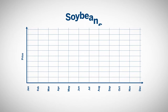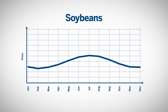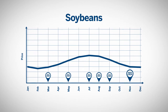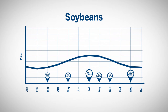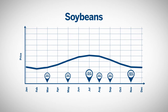With soybeans, harvest begins in September and continues through October into mid-November. Soybeans tend to follow a pattern where prices begin to decline in the July–August time frame, continuing through a February break, before reaching their seasonal highs in the summer.